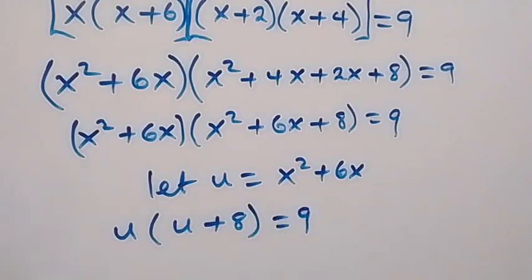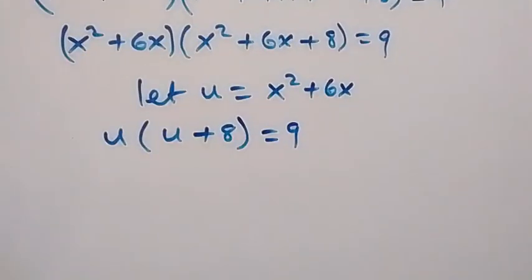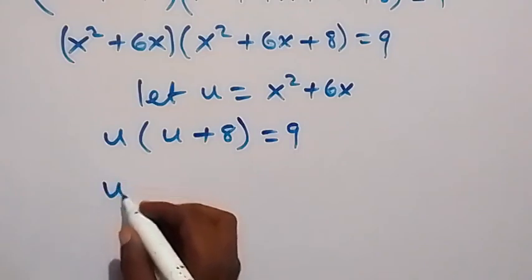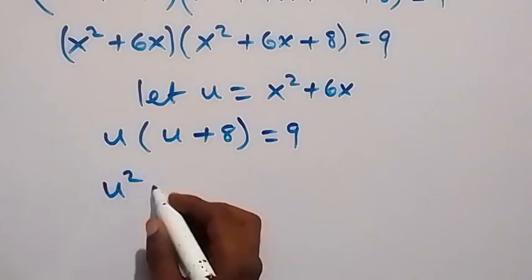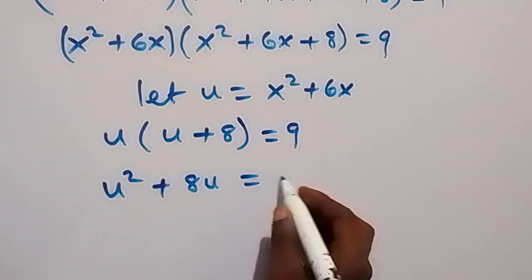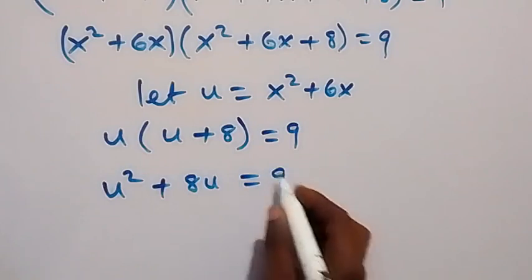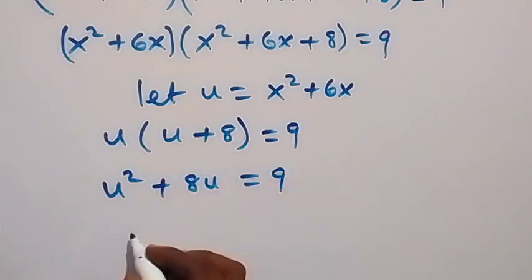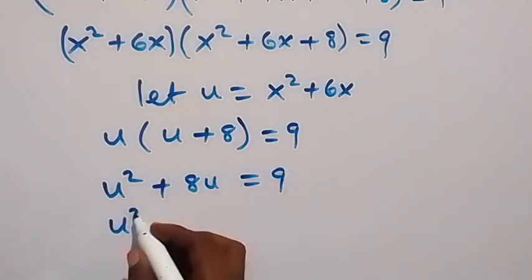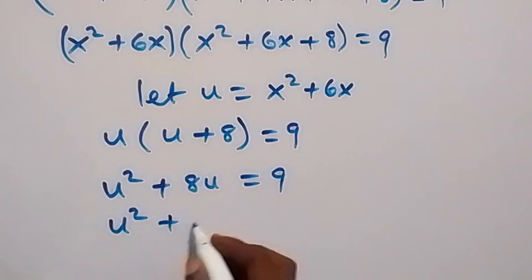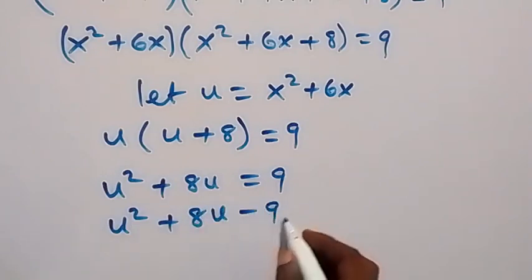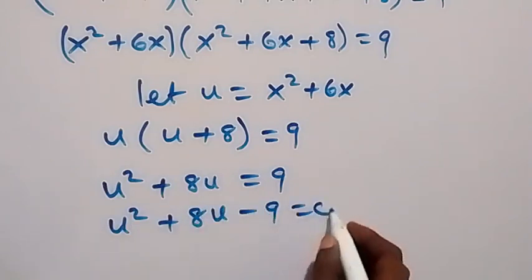So when we expand from here and we solve, we have u squared plus 8u equals to 9. Now bring 9 here and that will become minus, so we have u squared plus 8u minus 9, then equals to 0.